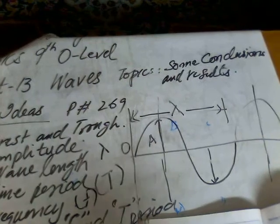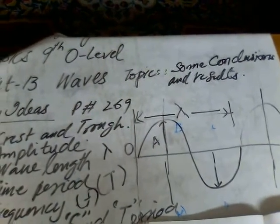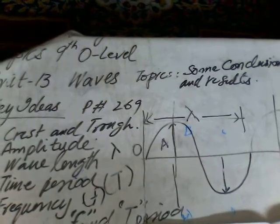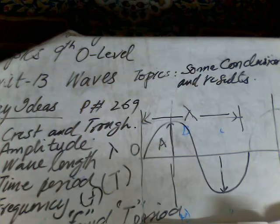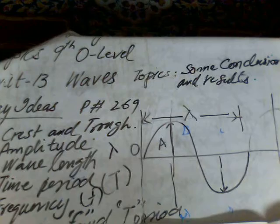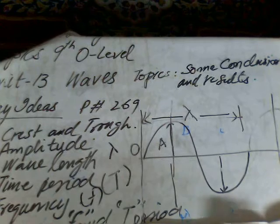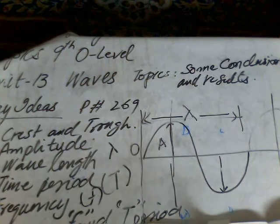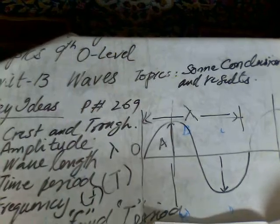We represent wavelength by lambda and frequency by f. So the relation between frequency and time period is that both are inversely proportional to each other. Time period T is equal to one over f, one over frequency. And frequency can be written as one over time period.